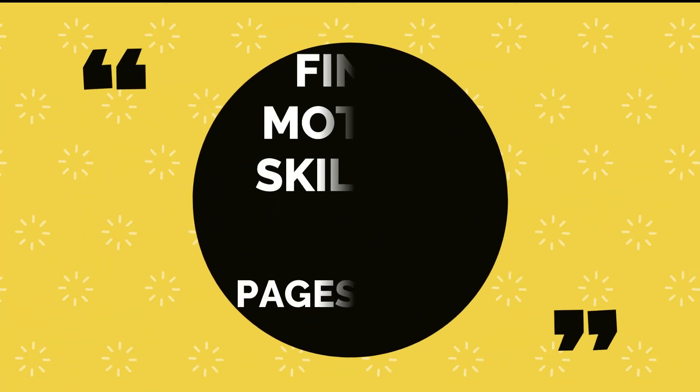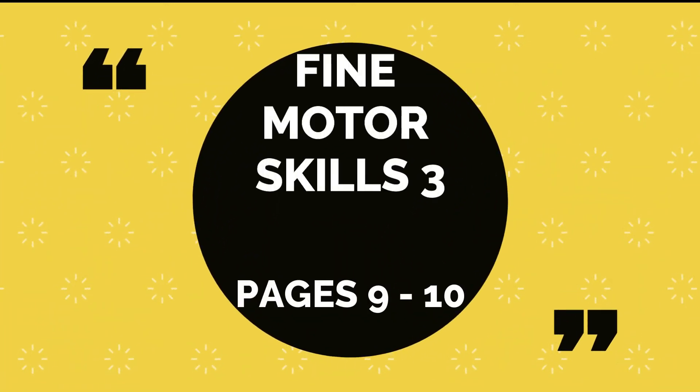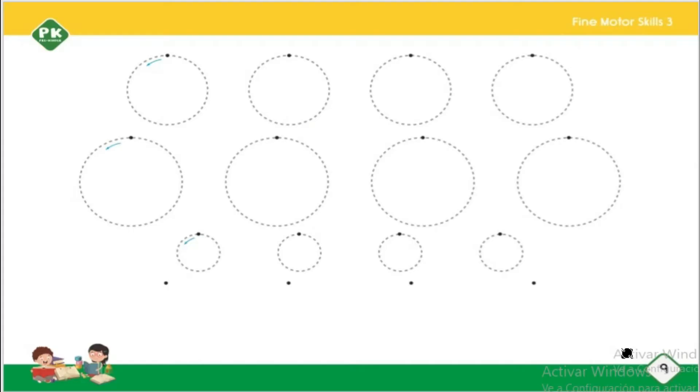Hello kids, welcome to Fine Motor Skills class. Today we are going to work on our yellow book 3, pages 9 and 10. On page 9, you have to trace the circles starting from the dot. Let's start tracing.